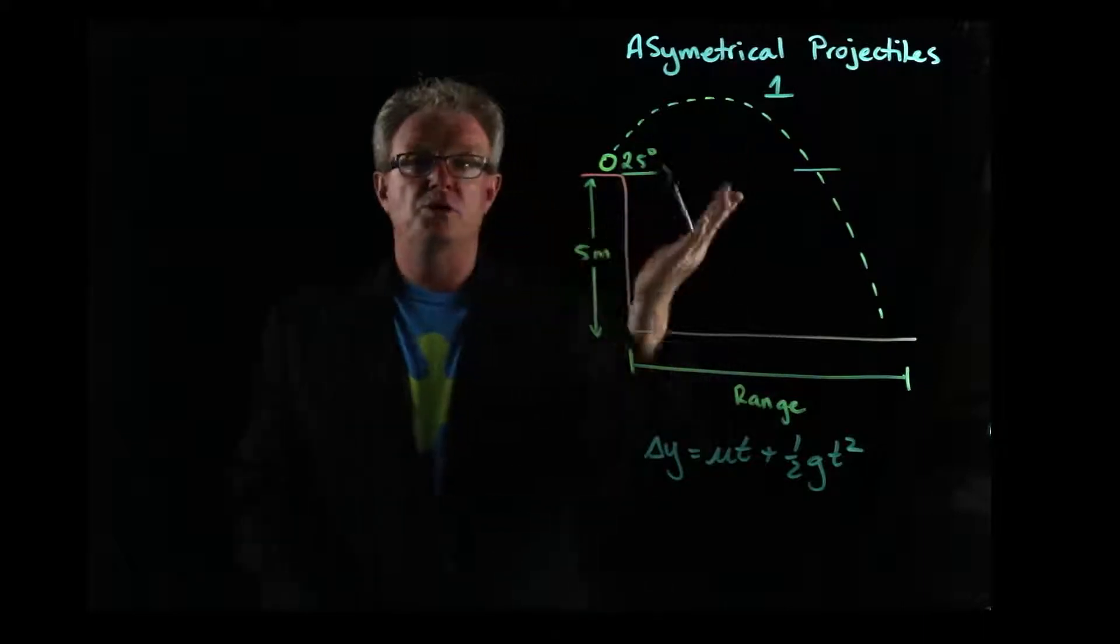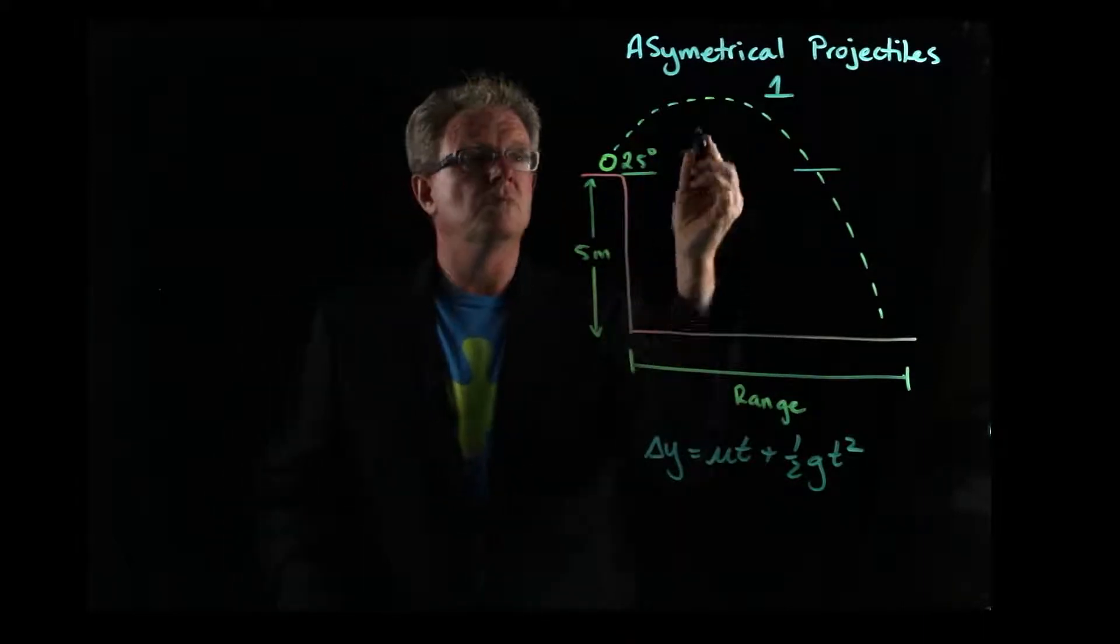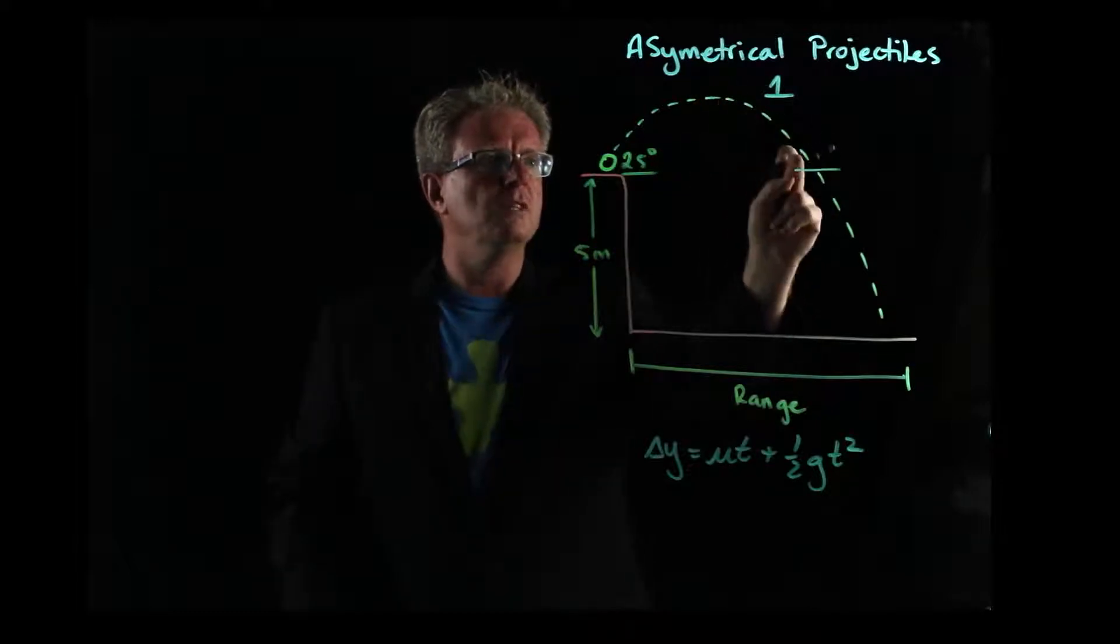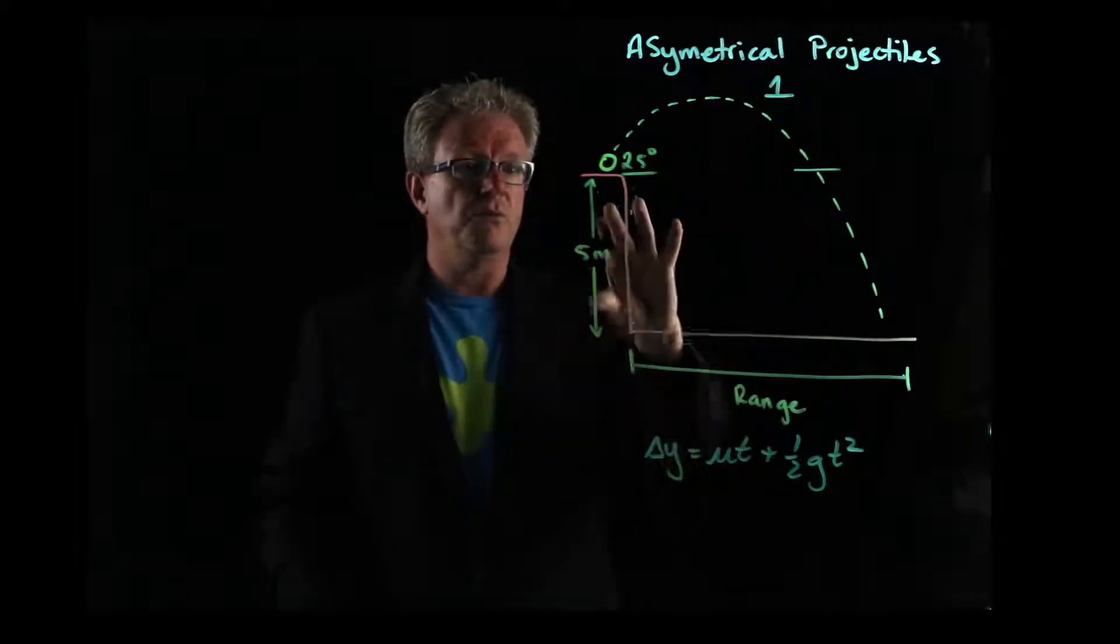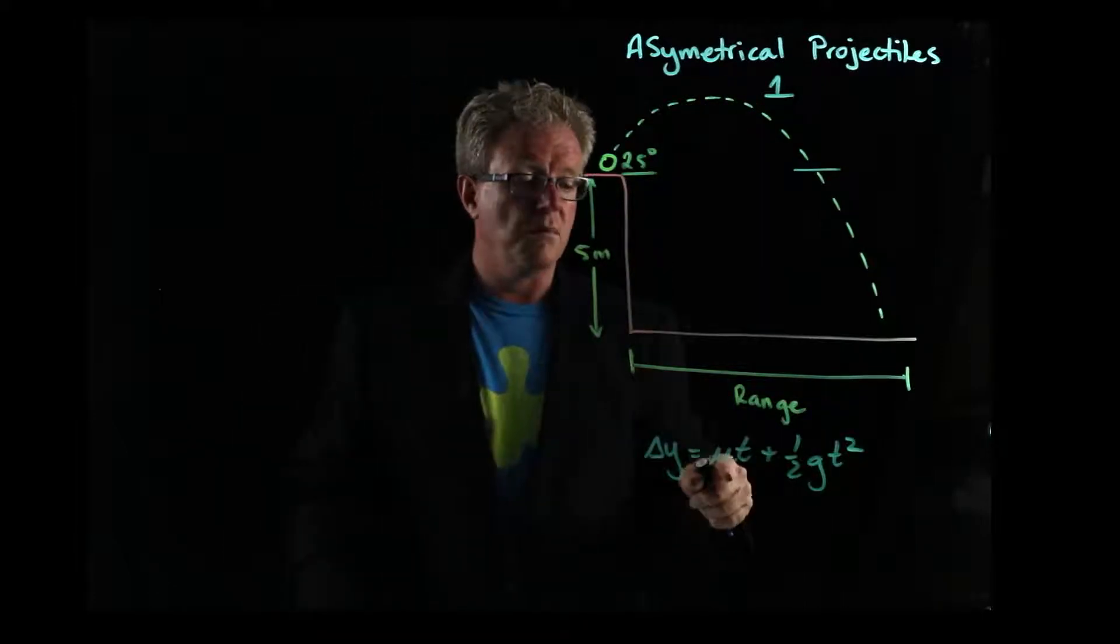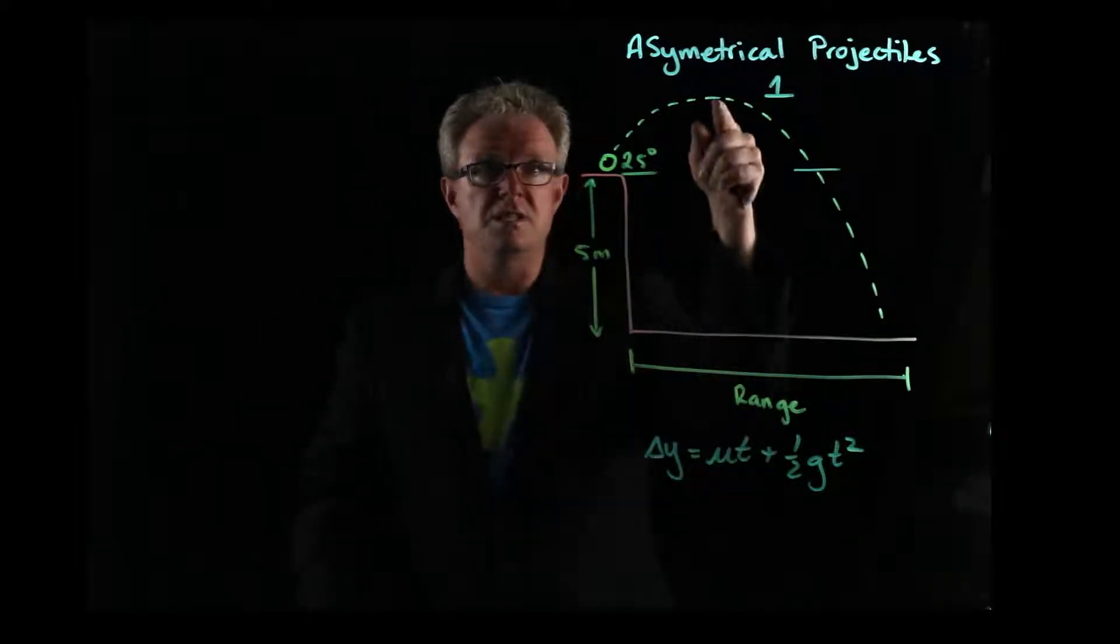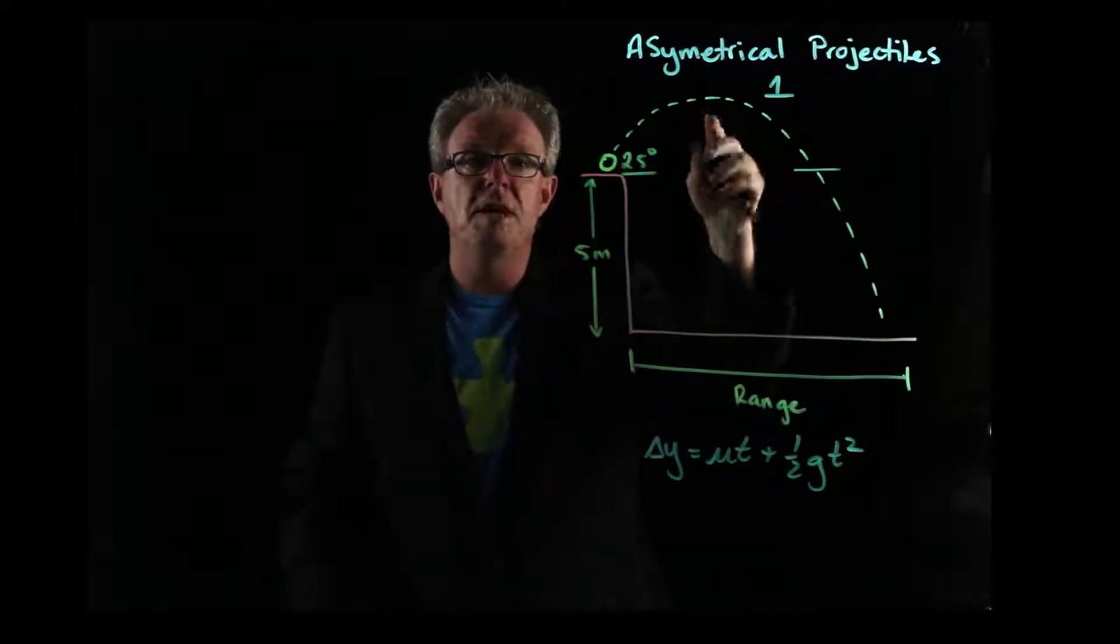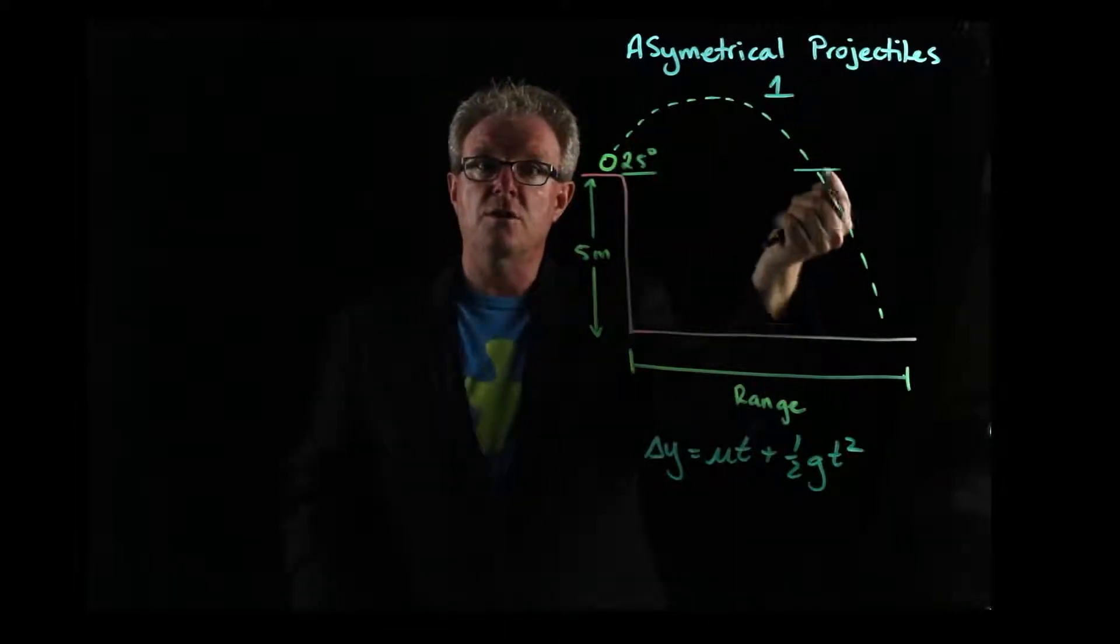Then we treat this as if it's just a horizontal one and we start there and we just find the time of flight for it to fall. And we did that if we knew the height. If we knew what the height was, we could put the value in there and we could make that equal to zero because we're starting from here and we could find the time of flight for half of it and then we times it by two to find the complete flight.